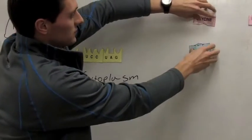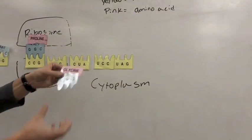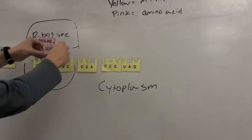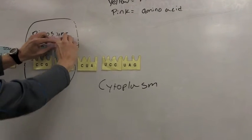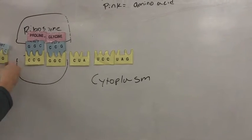And so our next transfer RNA has glycine attached to it, and so what we start to see happening is the messenger RNA and transfer RNA continue to move through the ribosome.